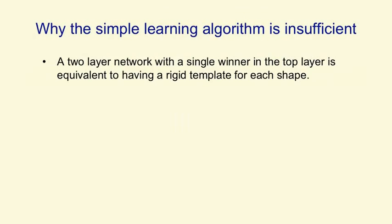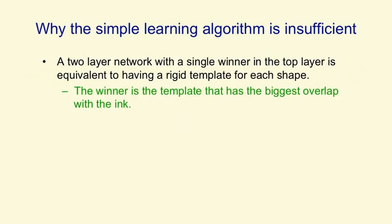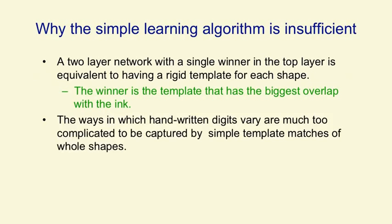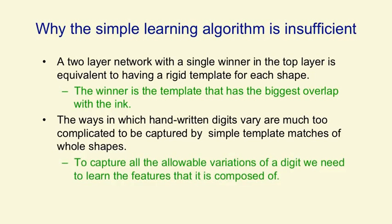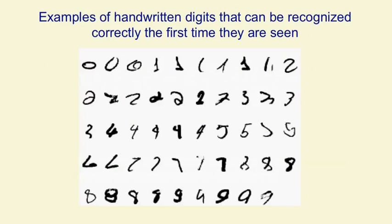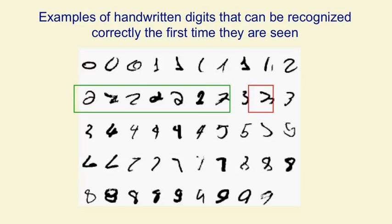One thing about this learning algorithm is that because the network is so simple, it's unable to learn a very good way of discriminating shapes. What it learns is equivalent to having a little template for each shape and then deciding the winner based on which shape has the template that overlaps most with the ink. The problem is that the ways in which handwritten digits vary are much too complicated to be captured by simple template matches of whole shapes. You have to model the allowable variations of a digit by first extracting features and then looking at the arrangements of those features. If you look at those twos in the green box, there's no template that will fit all those well and still fail to fit that three in the red box well. So the task simply can't be solved by a simple network like that.